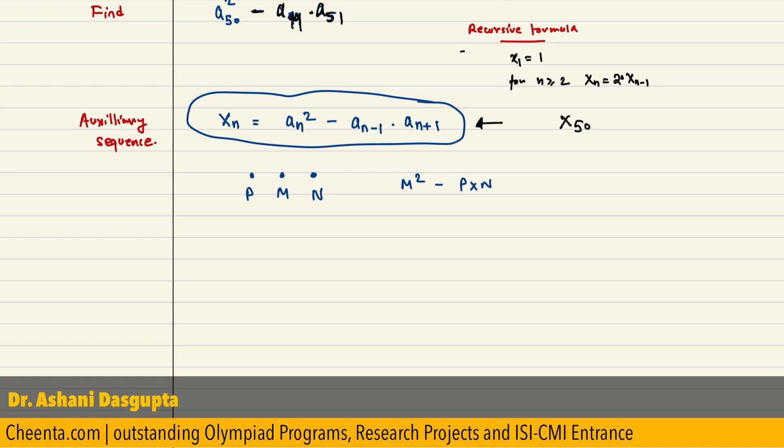Let us see what is x(n+1). Let us check that out. What is x(n+1)? So, x(n+1) is a(n+1) square minus an times a(n+2).